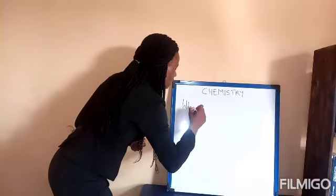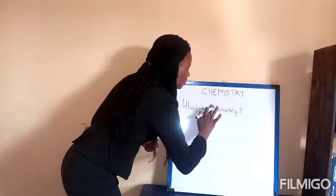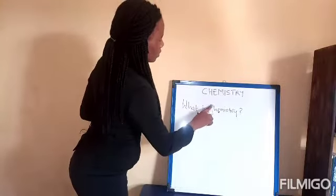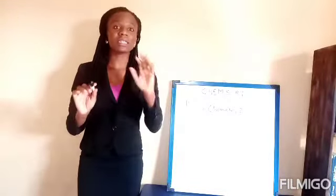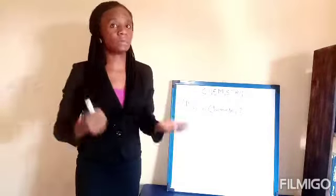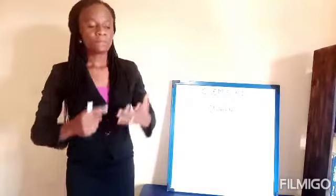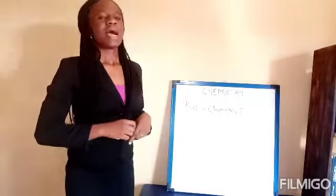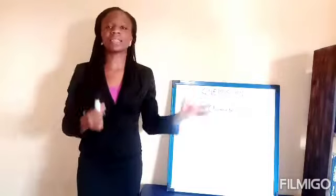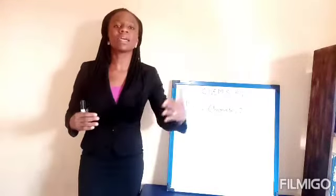To start with, we want to see what chemistry is. You already know by now that chemistry is a science subject — not an art and humanity subject. Chemistry is a branch of science that deals with the study of the structure, the properties, and the composition of matter. Note that word: matter. In your basic science knowledge, you've heard of matter, and you were told that matter is anything that has weight and can occupy space.